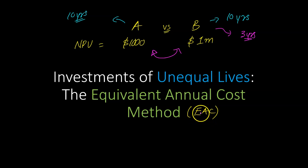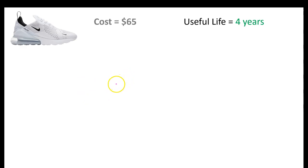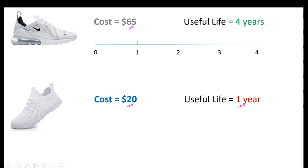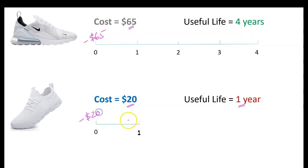Here's an illustrative example. Suppose you are a regular runner looking to buy a running shoe. One option is a Nike shoe that will cost you $65 today and last for four years. Alternatively, you can buy a generic brand — say from Walmart or Target — that costs $20 but only lasts one year. So with Nike you spend $65 upfront and get four years of running, while with the generic you spend $20 and get one year.